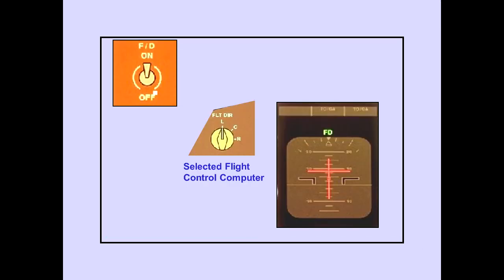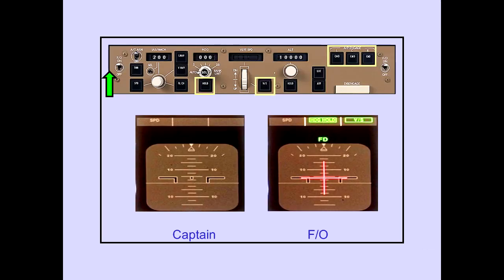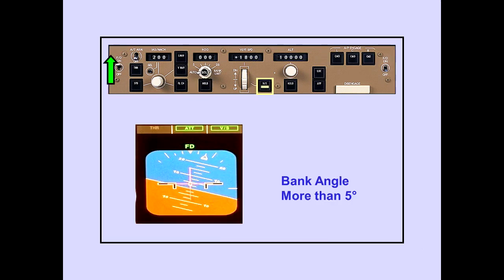With the respective flight director switch on, the selected flight control computer positions the command bars. In wings-level flight with no autopilots in command, turning the first flight director on automatically selects the heading hold and vertical speed modes. If bank angle is more than five degrees with no autopilots in command, turning the first flight director on automatically selects the attitude and vertical speed modes.